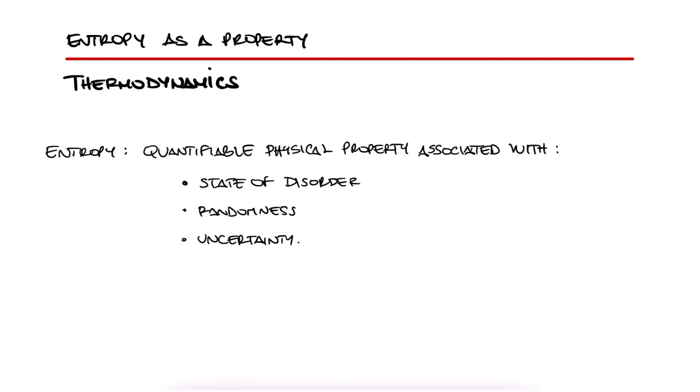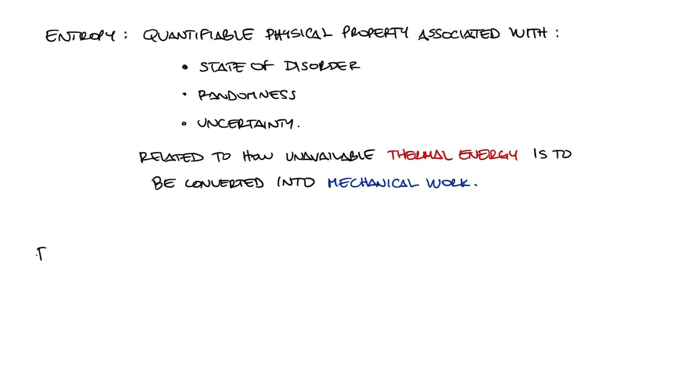Whatever the case may be, entropy is closely related to the unavailability of a system's thermal energy for conversion into mechanical work. A simple example can show how a property that measures uncertainty, like entropy does, works.